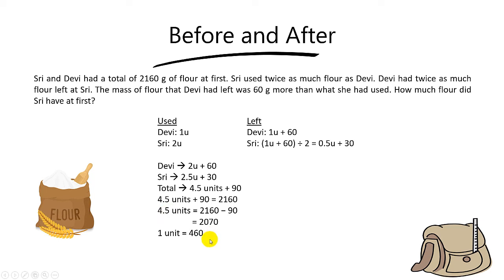Alright, and so now to find the amount of flour that Shree have at first, you simply let the 1 unit be 460. So you take 2.5 times 460, you should get 1150. And then you take 1,150 plus the 30. The answer is 1,180 grams of flour.